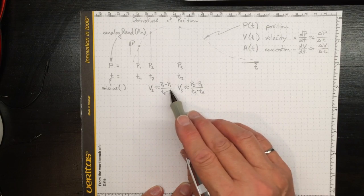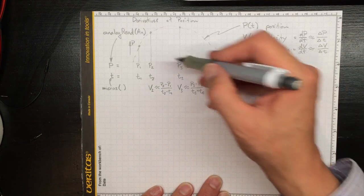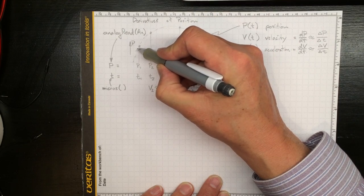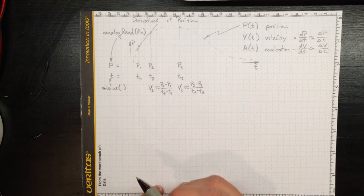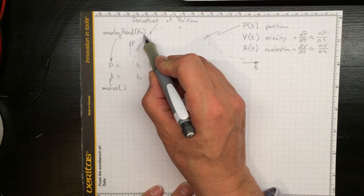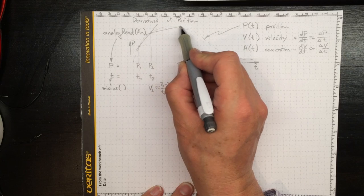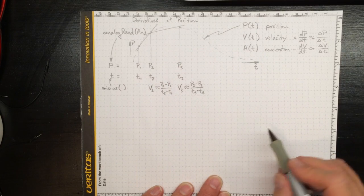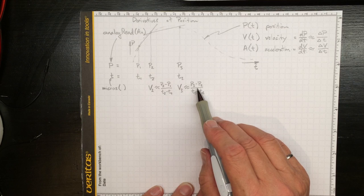And these are just estimates of the derivatives at these different times. So what we're doing is we're approximating that as the velocity, a straight line there, and we're approximating here a straight line between those two points as representing the velocity. That's what we're doing when we make this calculation.